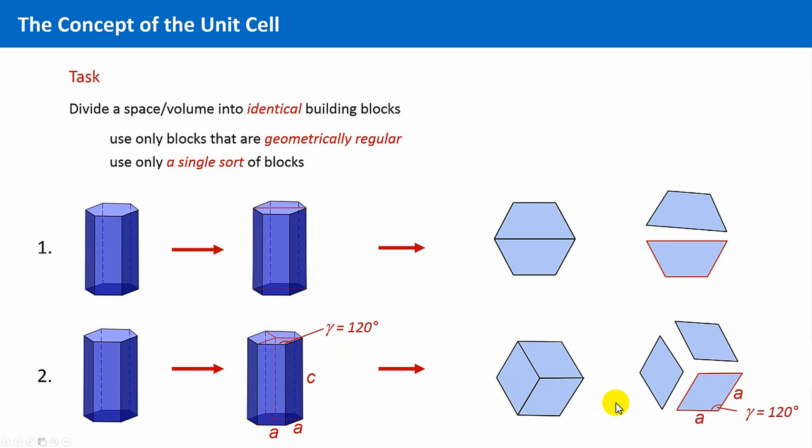What possibility is preferable? Well, two aspects. Firstly, this shape is obviously not as regular as this, because there are three different faces, and here we have only two.